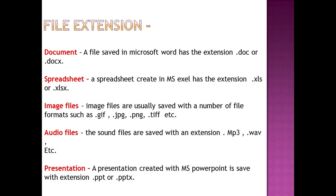Next is file extension. Whatever we save — whether it is a document, MS Excel, or PowerPoint — each file is saved with an extension. The extension is the identification of that file. A file saved in Microsoft Word has the extension .doc or .docx. A spreadsheet created in MS Excel has the extension .xls. If you save an image on your computer, the extension will be .gif or .jpg.